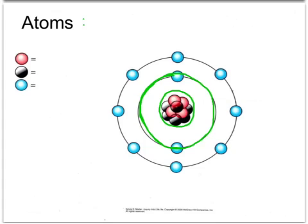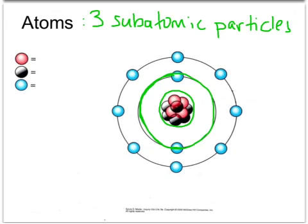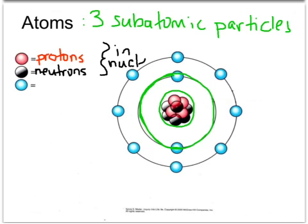There are three subatomic particles, and these are the three different colors of circles you see in this diagram. Our first type, the ones in red, are our protons. Our next type, still within the nucleus, are our neutrons. These are the two types of subatomic particles found in the nucleus, and they take up most of the space within an atom. Our third type of subatomic particle is our electrons, and these are the ones you find rotating in shells, outside the nucleus.